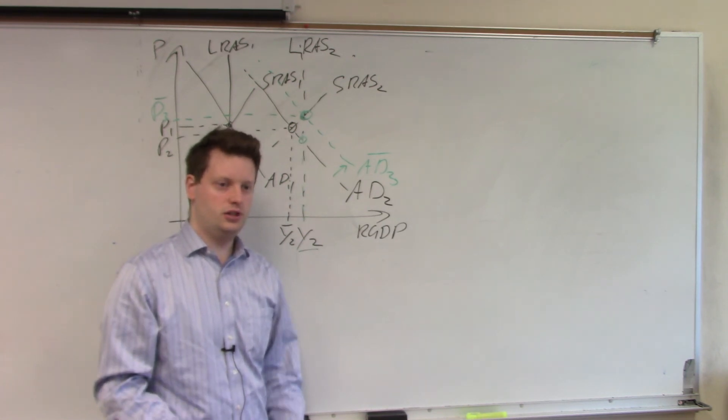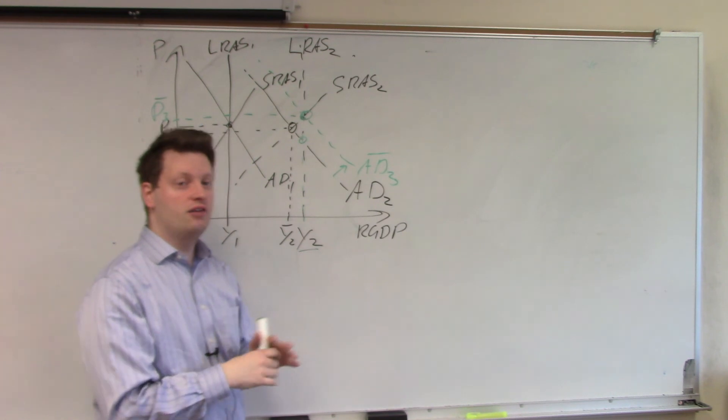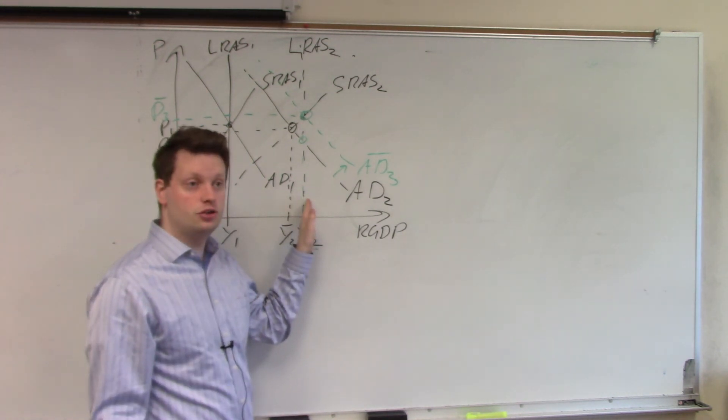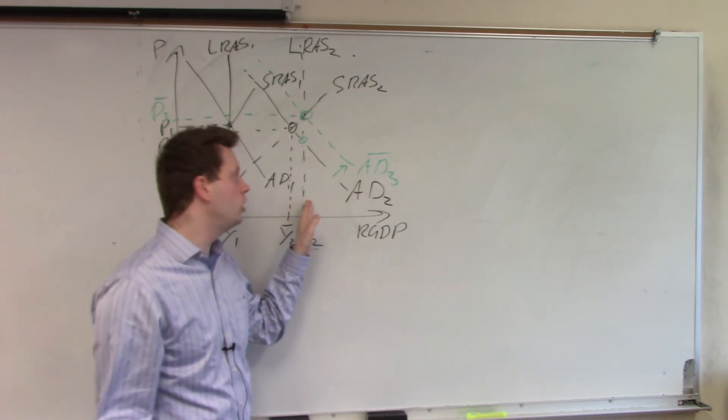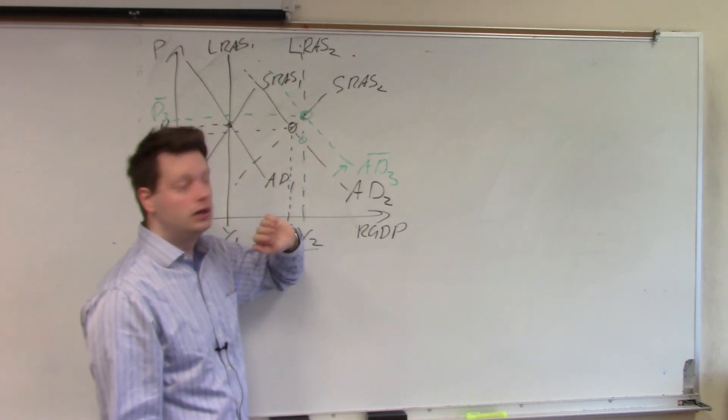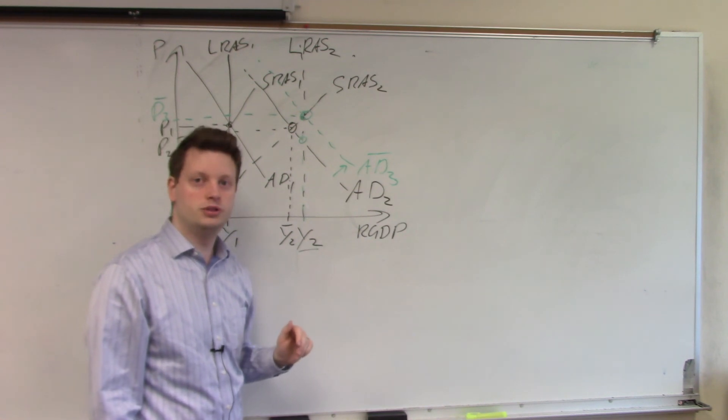So, let's quickly recap. Assume that we have an economy that shifts from being at potential to going below potential. If the central bank knows that, it can do an expansionary policy, which will then shift aggregate demand to the right, which will cause the economy to go back to potential.